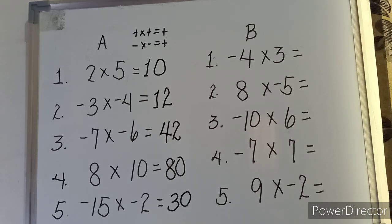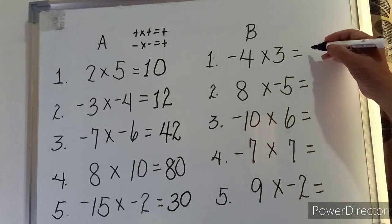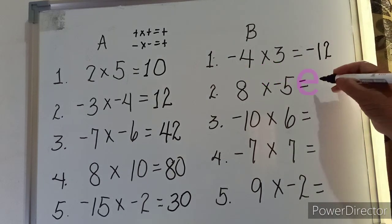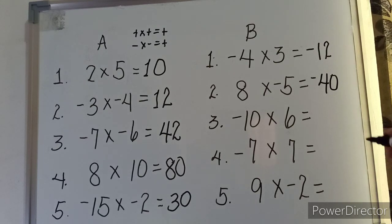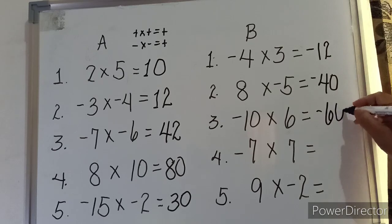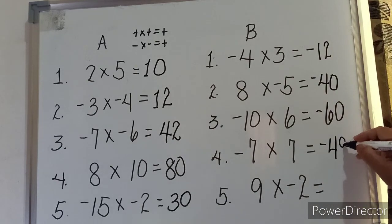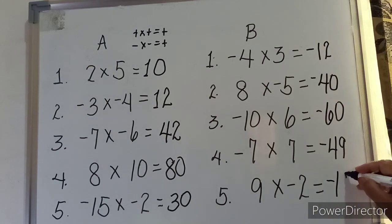Now let us take Set B of our examples. Notice that the factors are a combination of a negative and a positive. Negative four times three gives you negative twelve. Four times negative five equals negative twenty. Negative ten times six gives us negative sixty. Negative seven times seven equals negative forty-nine. Nine times negative two equals negative eighteen.